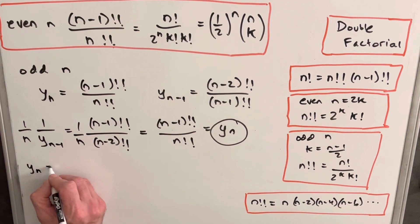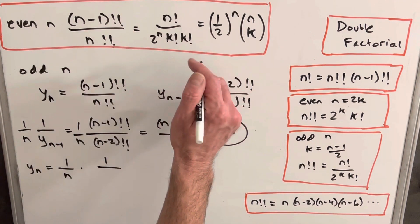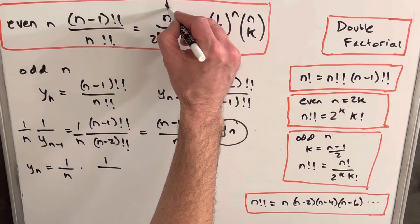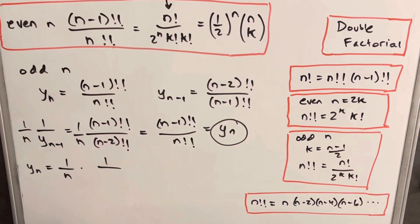So then using that, we have our y sub n that we want, 1 over n times 1 over, and this y_n minus 1, we have a formula for that. Okay, that's this up here. Let's use this version because we don't want to get confused with our n choose k notation.